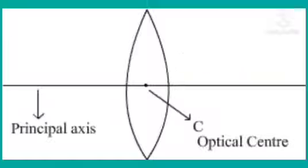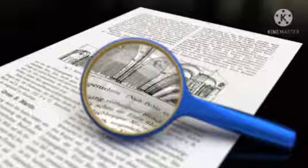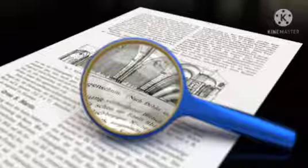A magnifying glass is actually a convex lens mounted on a lens holder. When an object is placed between the focus and the lens, it produces an enlarged virtual erect image of the object on the same side of the lens as the object. This is why it is used for reading fine print and to observe tiny things.